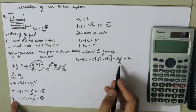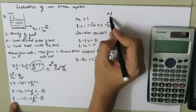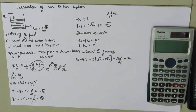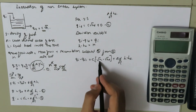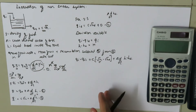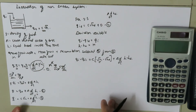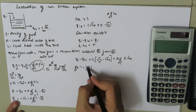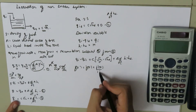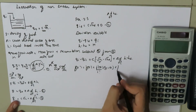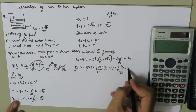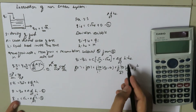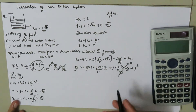We now have a nonlinear term, root H. To linearize it, we apply the Taylor series: F(x) equals F(a) plus F'(a)/1! times (x minus a) plus F''(a)/2! times (x minus a)² and so on. We neglect higher-order terms and keep only the first-order derivative.